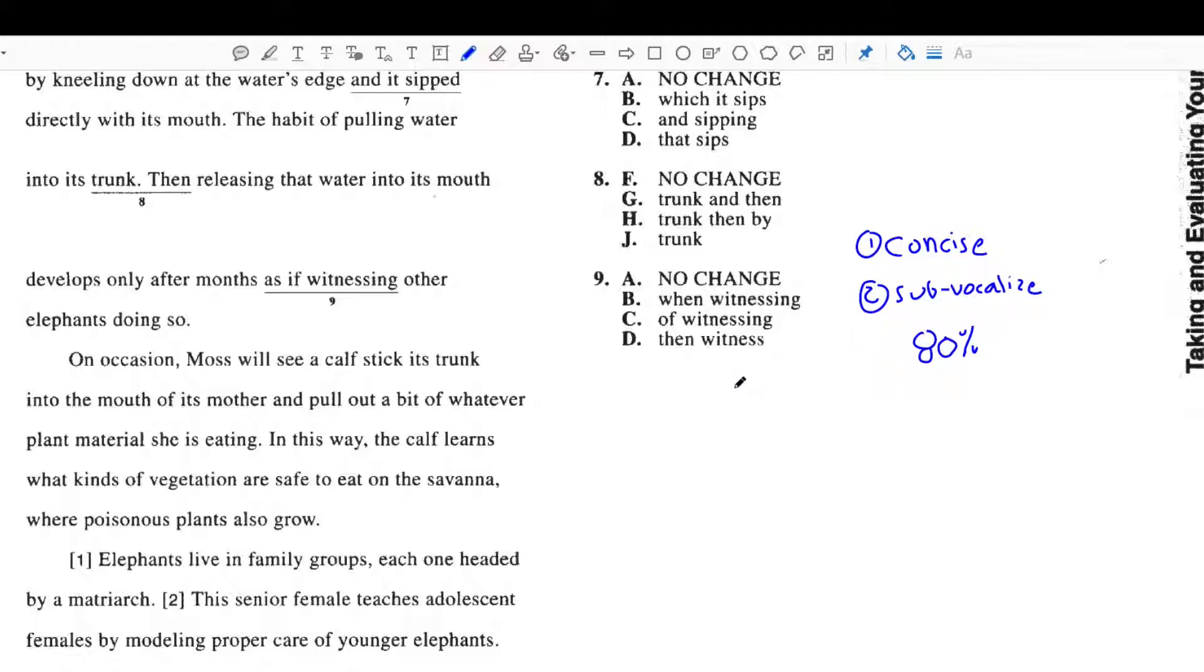I'm going to start by reading it as is, then releasing that water into its mouth develops only after months, as if witnessing other elephants doing so. So answer choice A is neither the most concise, and when I sub-vocalized it, it didn't make any sense, so it's neither concise, nor did the sub-vocalization make it sound smooth. It was jarring.